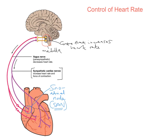We also have a centre that decreases heart rate. That centre is also linked to the sinoatrial node, but via the parasympathetic nervous system, specifically the vagus nerve. So we have two centres in the medulla — one increasing and one decreasing heart rate — each connected to the SAN via different branches of the nervous system.